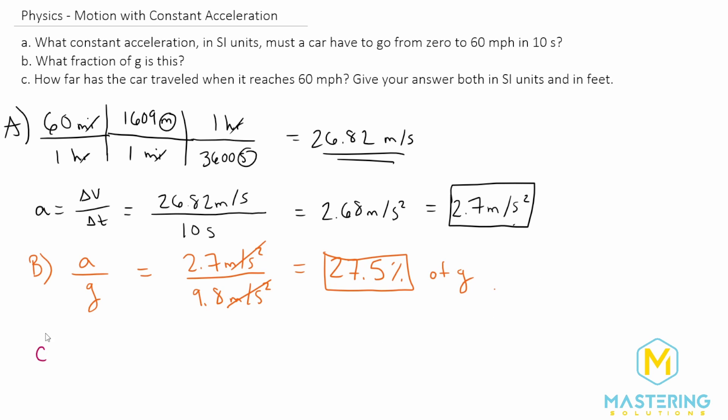Now for the last one, for part c, we want to figure out how far the car traveled when it reaches that 60 miles per hour, and we have to give it in both SI units and feet. So now for part c we'll be using the kinematic equations, and the one that we have all the information and the variable we're looking for is this one here.